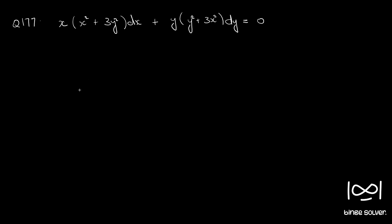Question number 177: x into (x squared plus 3y squared) dx plus y into (y squared plus 3x squared) dy equal to 0. The given equation is in the form M dx plus N dy equal to 0. We will first check whether the given differential equation is exact using the necessary and sufficient condition: ∂M/∂y equal to ∂N/∂x.